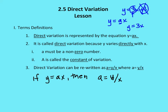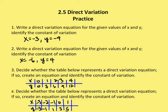Let's take some practice problems. We're going to do both the lesson and practice. The first question — we have four of them — says: write a direct variation equation for the given values of x and y, and then identify the constant of variation.